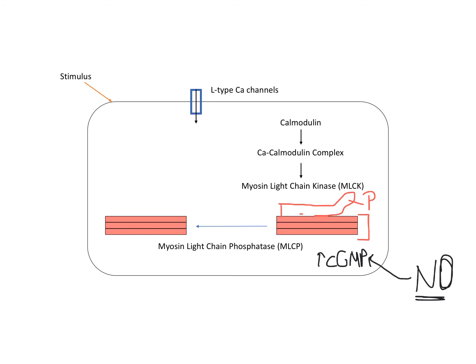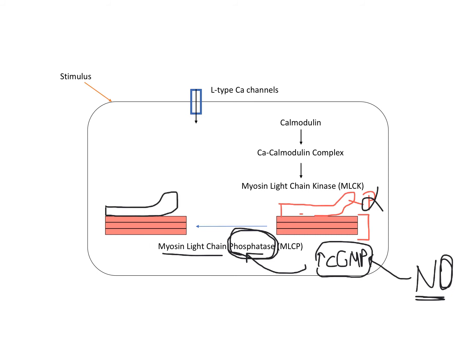Increasing cyclic GMP also increases protein kinase G. Additionally, increased cyclic GMP directly activates myosin light chain phosphatase. Myosin light chain phosphatase cuts off the phosphates from its substrate, which is the myosin light chain. If we cut the phosphate via myosin light chain phosphatase, the muscle becomes dephosphorylated and relaxed.